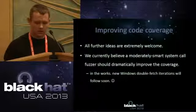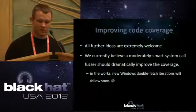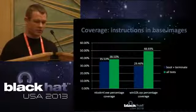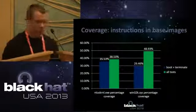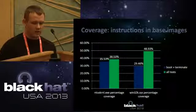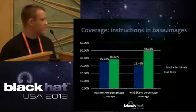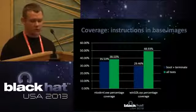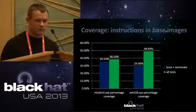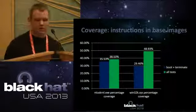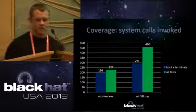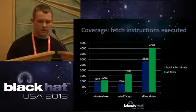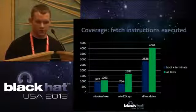For code coverage, we booted the system, did some navigation like running Internet Explorer and default tools, played some multimedia, started StarCraft 1, and ran some Wine conformance tests. We figure that's way too little. Our current belief is that a moderately smart system call fuzzer could dramatically improve coverage — maybe two or three times. For statistics: the blue part is code coverage from just booting and shutting down the system; the green part is from running all the tests. For Win32K the coverage is not bad — about 50% — but there's still much room for improvement. We also have statistics for system calls invoked and the number of fetch instructions detected in the base kernel, Win32K, and all modules.